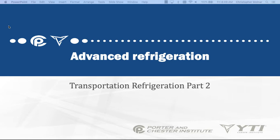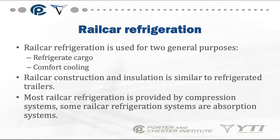This is part two of the transport refrigeration introduction slide set. Rail car refrigeration is another portion of transport refrigeration and is used for two general purposes: first, to refrigerate cargo, and second, for comfort cooling. Refrigerating cargo involves the movement of goods that need to be kept cold, while comfort cooling refers to air conditioning in passenger rail service.